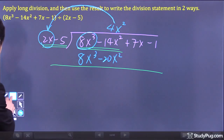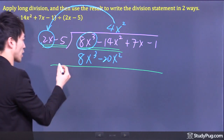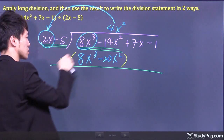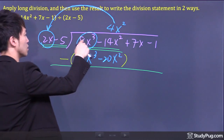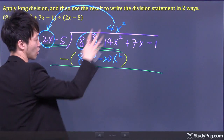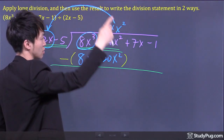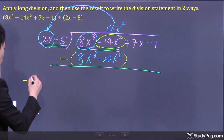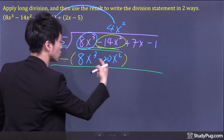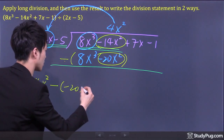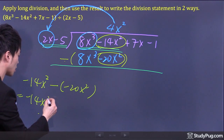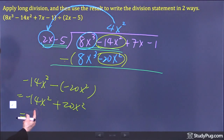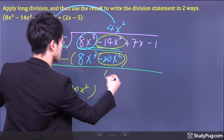We have to go top minus the bottom — subtraction. 8x³ minus 8x³ canceled out. Negative 14x² minus negative 20x² — you got to be careful. That becomes negative 14x² plus 20x², which gives us positive 6x².